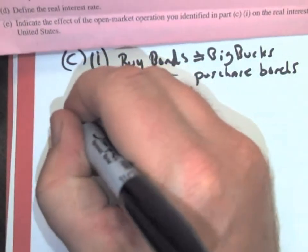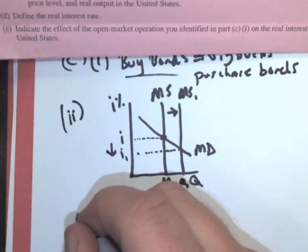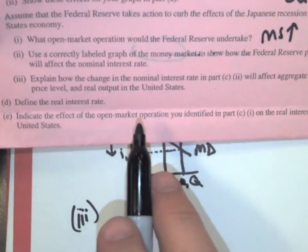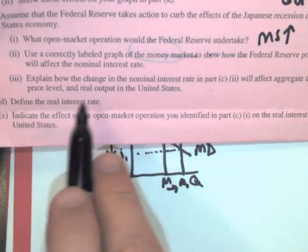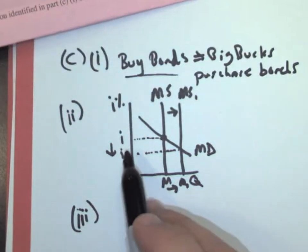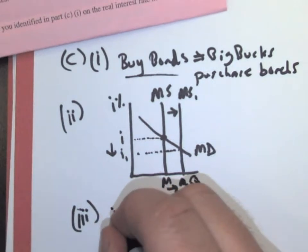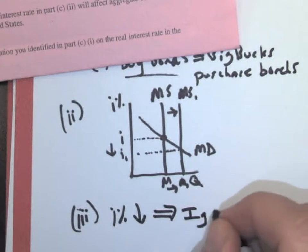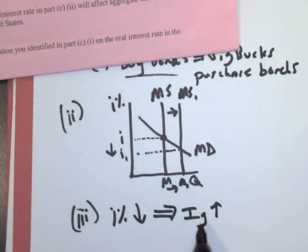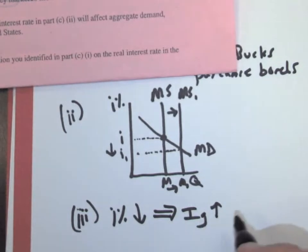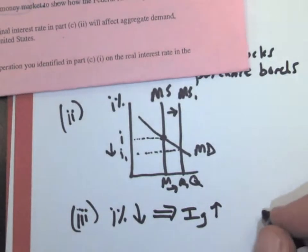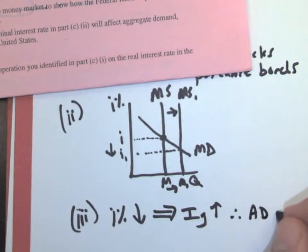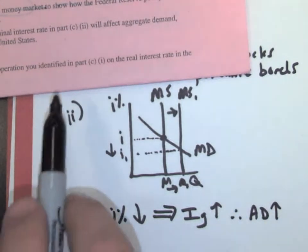So now we have our correctly labeled graph. Now they want us to, so this is part two, our graph. And part three is going to be explain how the change in the nominal interest rate in part C will affect aggregate demand, price level, and real output in the United States. So we solved up here that interest rates decreased. And what that's going to lead to is investment going up. Remember, people like to borrow money at low interest rates. So at that low interest rate, they're going to borrow, and I is part of SIGX. So therefore, if SIGX is going up on one side, aggregate demand is going to go up on the other side.